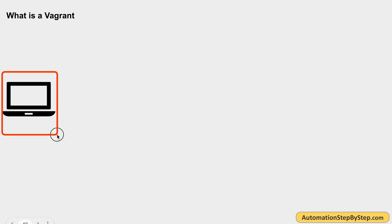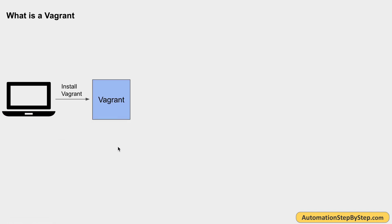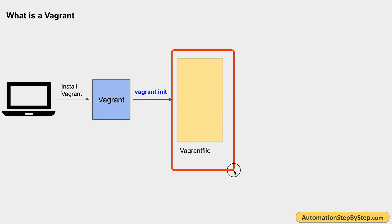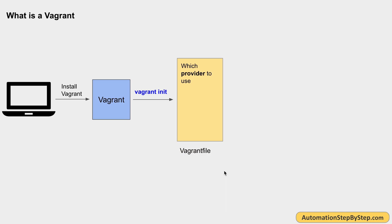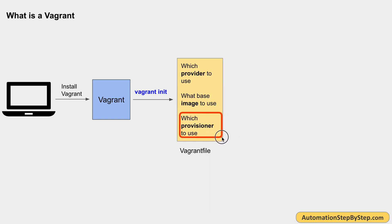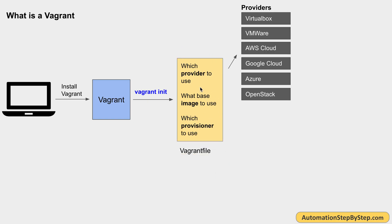Let us see how Vagrant works. On your host system, you install Vagrant. Once installed, you can run the command 'vagrant init', which will create a file called the Vagrantfile. In this Vagrantfile, you give details about the provider to use. There are multiple providers for virtual machines — VirtualBox, OpenStack, Amazon EC2, and others. You also give information about the machine and the image to use. For providers, we have options like VirtualBox, VMware, AWS Cloud, Google Cloud, Azure, and OpenStack.